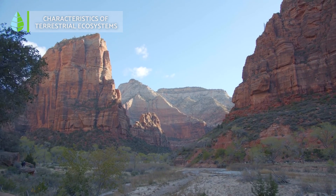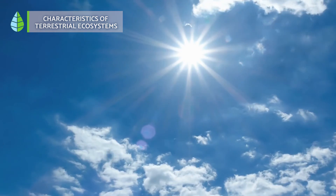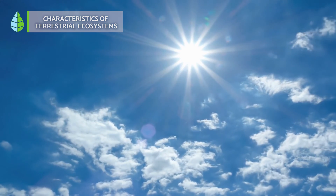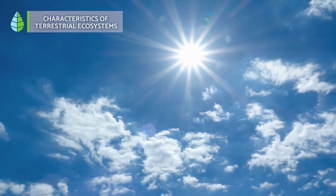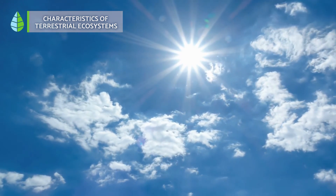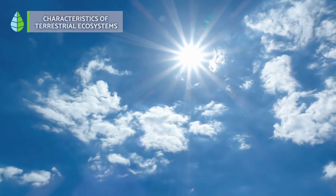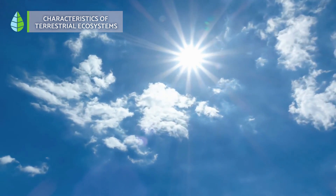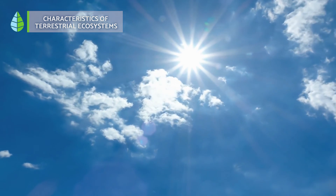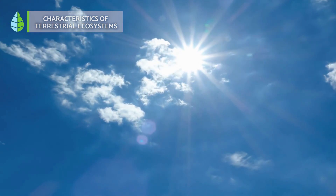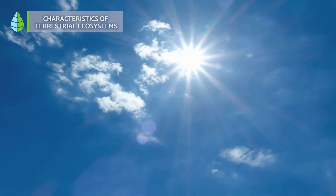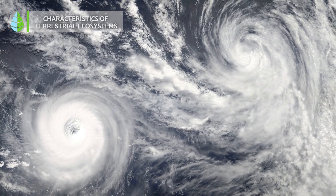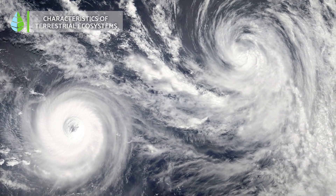Abiotic factors such as climate, soil composition, humidity, altitude, latitude, and nutrient availability play a crucial role in determining the types of plant and animal life present in a particular ecosystem.